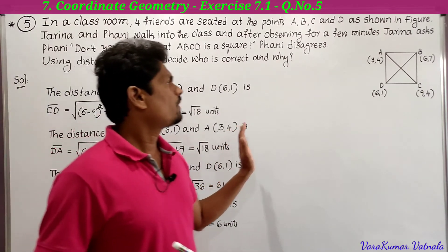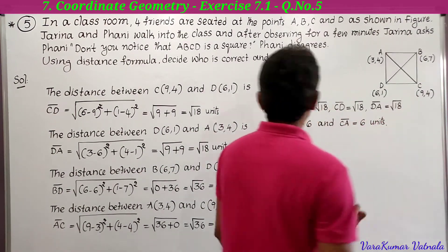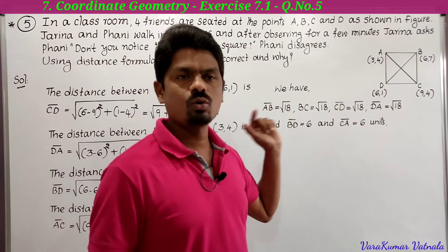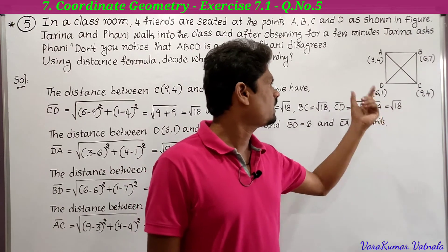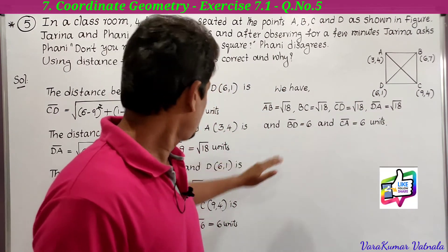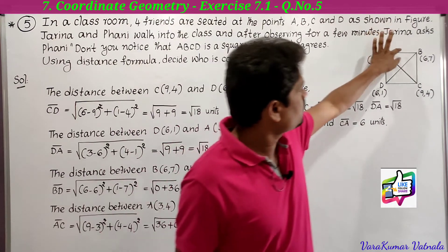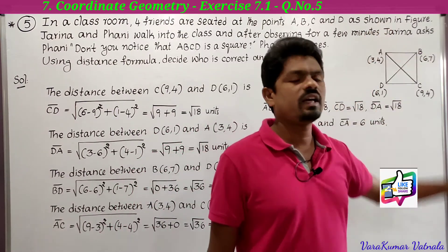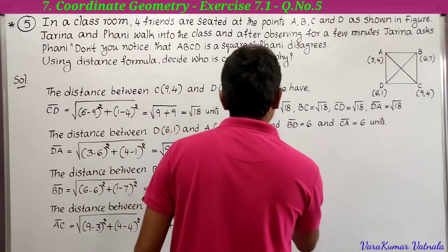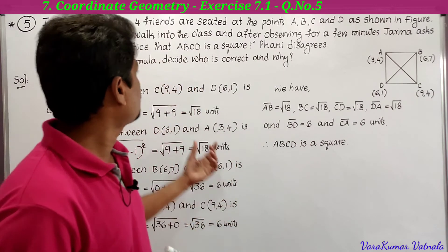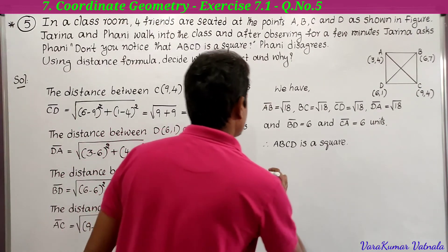Now we have the lengths of all four sides and the diagonals. AB = BC = CD = DA = √18 units, and BD = CA = 6 units. The lengths of all four sides are equal and the lengths of the diagonals are equal. Therefore, ABCD is a square, and Jarina is correct.